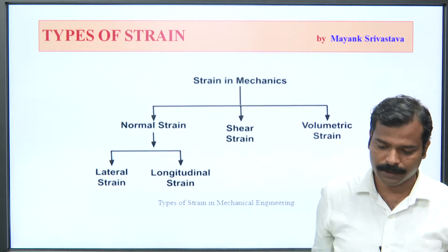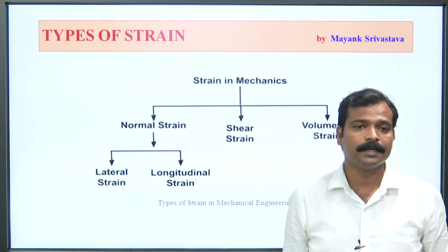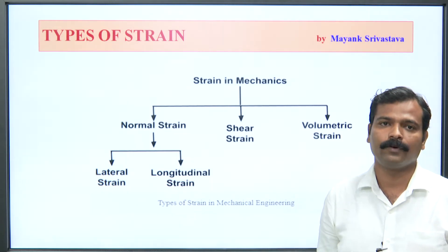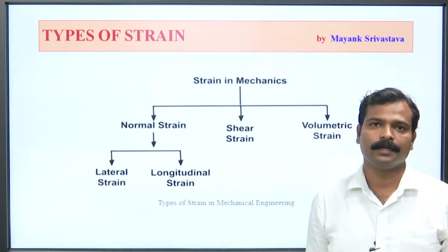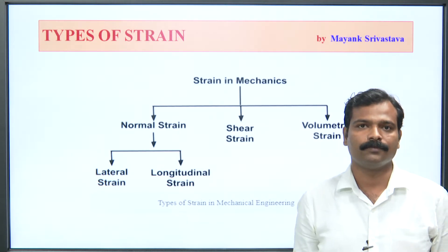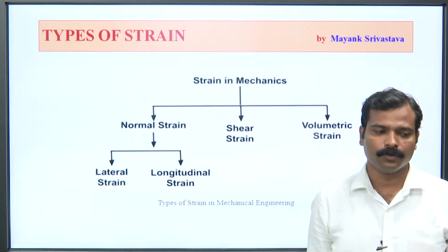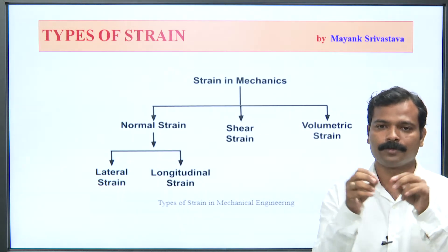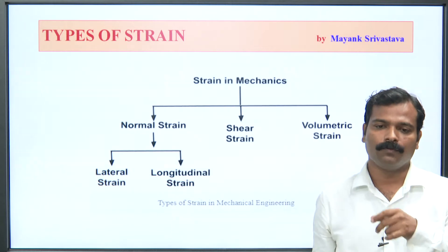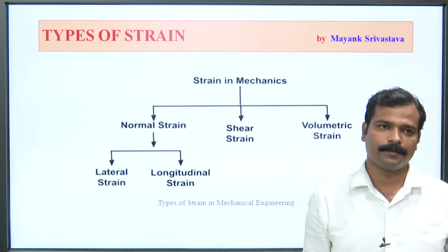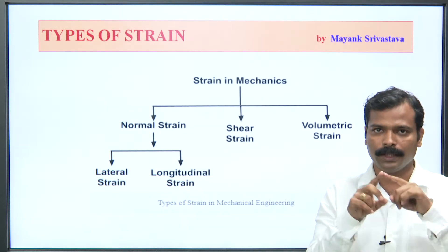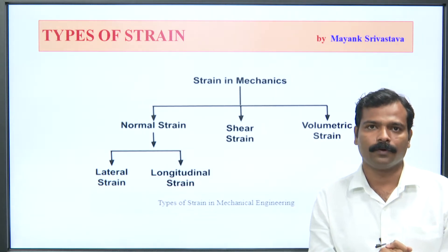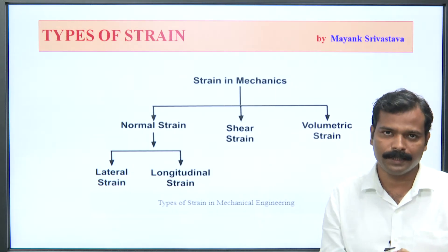Next is volumetric strain. Volumetric means that in x, y, and z — in three directions — if there is deformation in any material, then you call it volumetric strain. For example, if there is a box and you put force on the x-axis, y-axis, and z-axis, the deformation in these three directions is called volumetric strain.